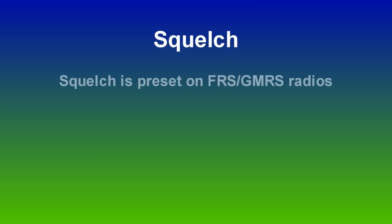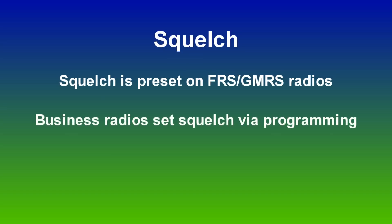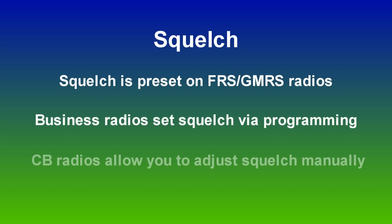Consumer FRS GMRS radios usually have an auto squelch feature that is preset by the factory. Business radios typically adjust squelch through programming, while CB radios have a knob to allow you to adjust the threshold and break squelch manually.